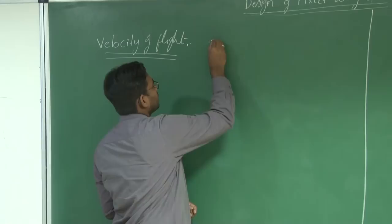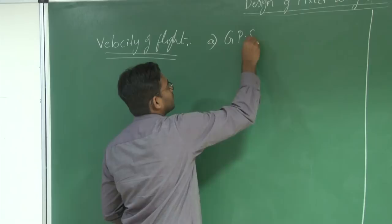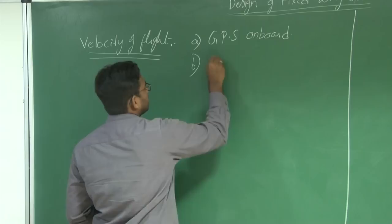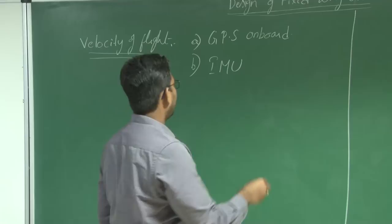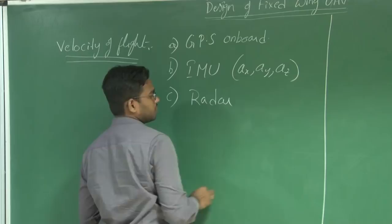One simple method is to install an onboard GPS. Second, you can have an IMU — inertial measurement unit — which measures the linear accelerations and integrates these linear accelerations to get the corresponding velocity. And if you have a radar at the ground station, you can measure both the position as well as the velocity.